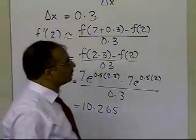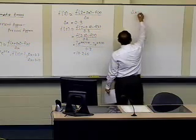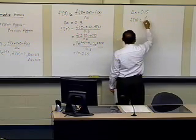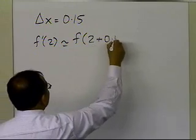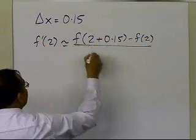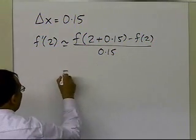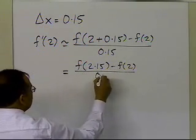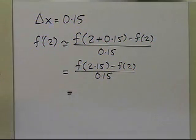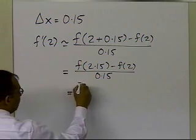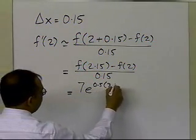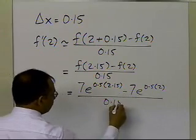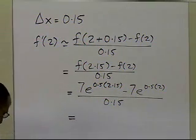You can repeat the whole process for delta x equal to 0.15. In that case, f prime of 2 is approximately equal to the value of the function at 2 plus 0.15, minus the value of the function at 2, divided by 0.15. That gives the function evaluated at 2.15 minus the function at 2, divided by 0.15. Substituting x equals 2.15 in the first term and 2 in the second term, divided by 0.15, this number turns out to be 9.8799.